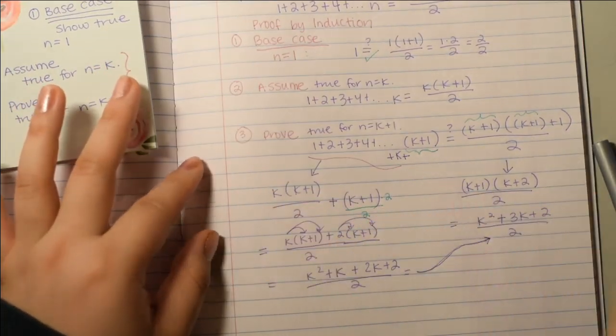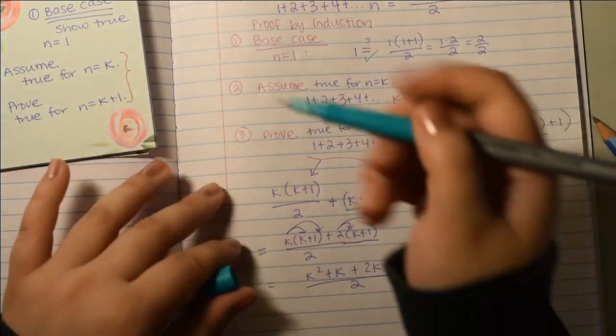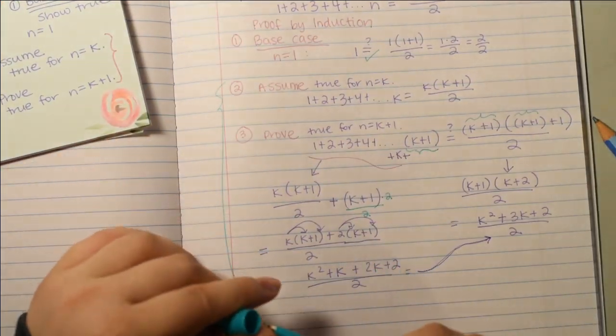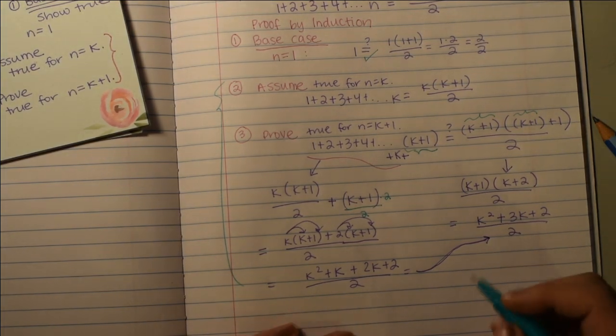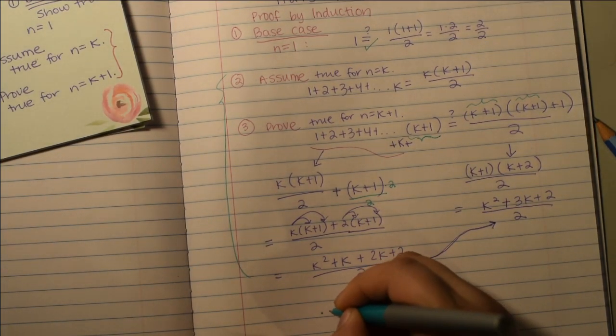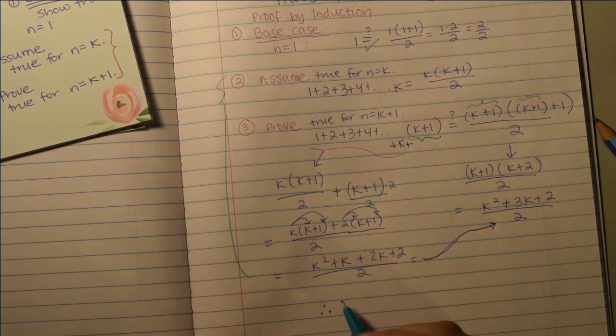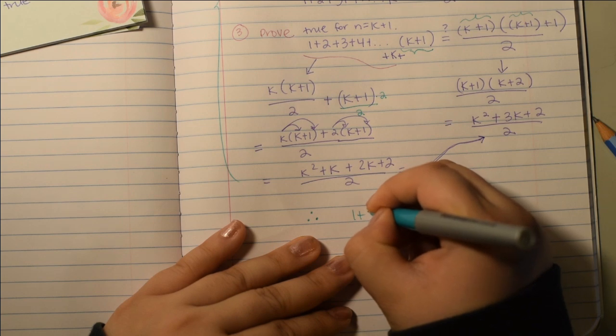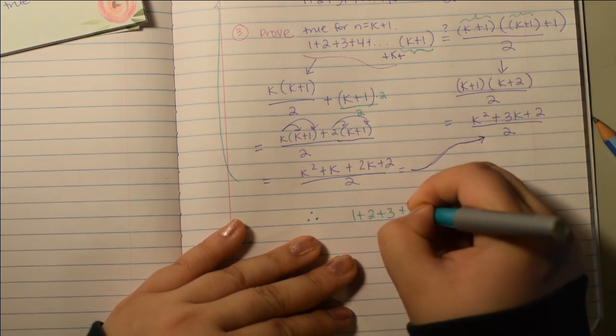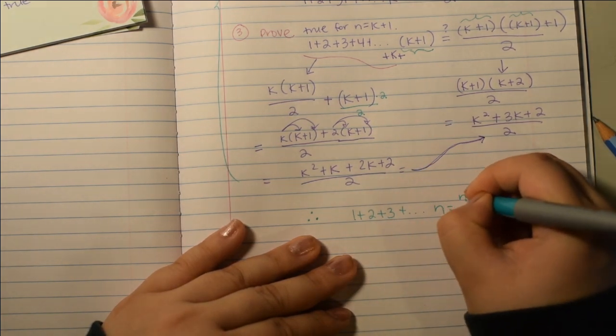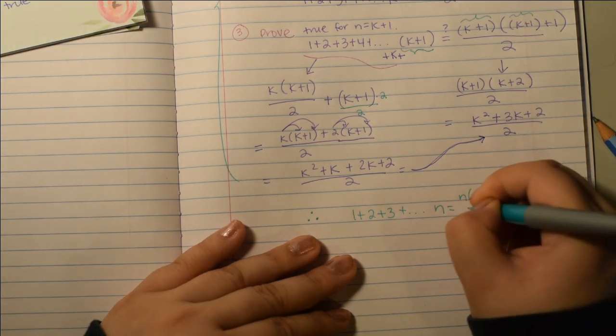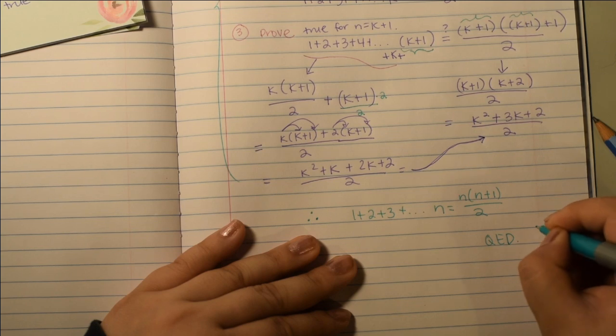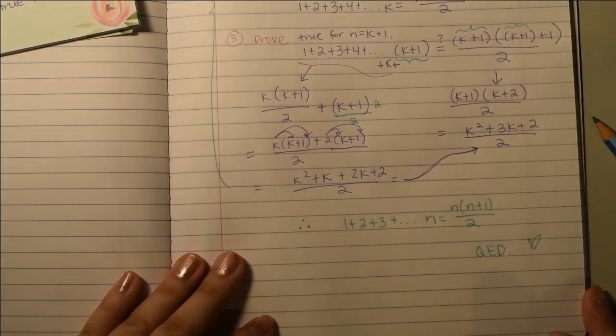And that's it. So, these two together are usually considered the inductive step and the base step. And then you can just write therefore, you know, just basically repeat your proof. 1 plus 2 plus 3 plus dot dot dot plus n equals n times n plus 1 over 2. Q-E-D. Good job.